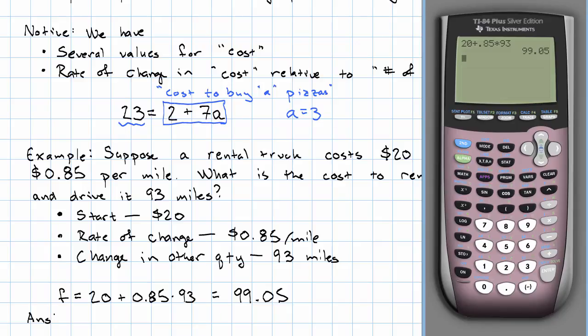We'll take $20 plus $0.85 times 93 miles is $99.05. So the answer is $99.05.